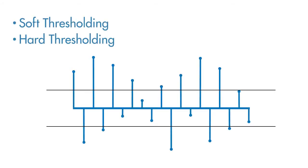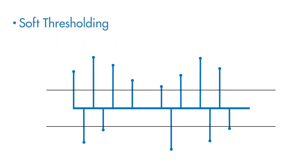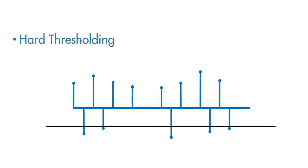There are two thresholding operations: soft thresholding and hard thresholding. In both cases, the coefficients with magnitude less than the threshold are set to zero. The difference between these two thresholding operations lies in how they deal with coefficients that are greater in magnitude than the threshold. In the case of soft thresholding, the coefficients greater in magnitude than the threshold are shrunk towards zero by subtracting the threshold value from the coefficient value, whereas in hard thresholding, the coefficients greater in magnitude than the threshold are left unchanged.